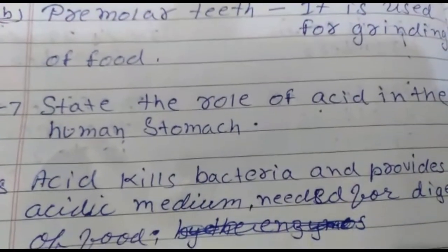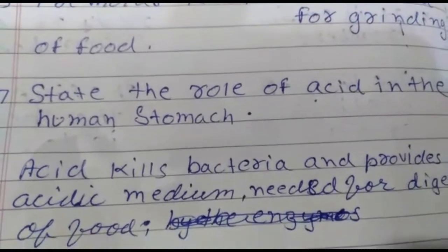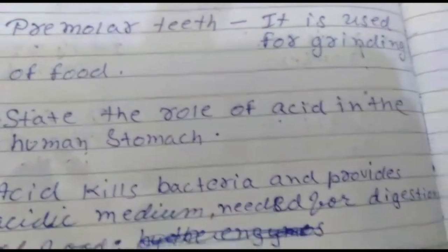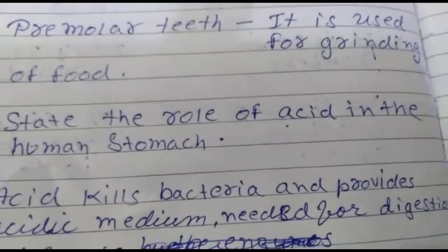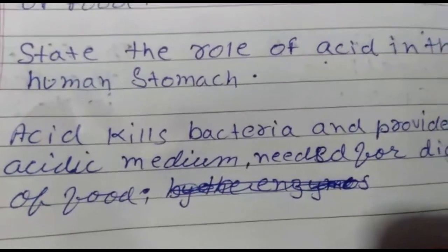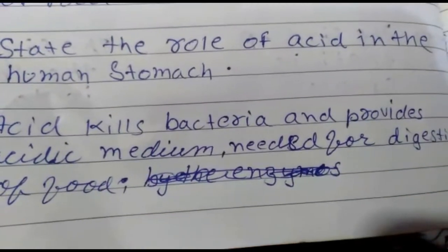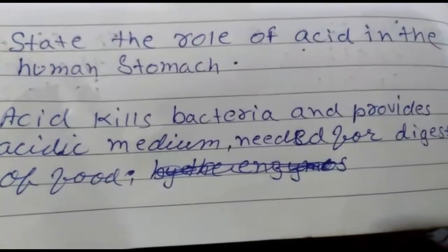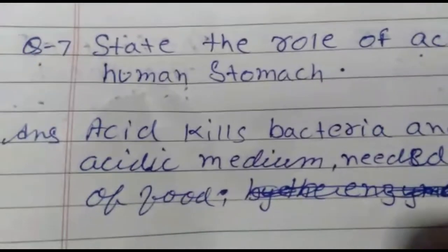Question number seven: state the role of acid in the human stomach. HCl is secreted in the stomach. Acid kills bacteria and provides the acidic medium that is important for the digestion of food. Without an acidic medium, digestion is not possible.